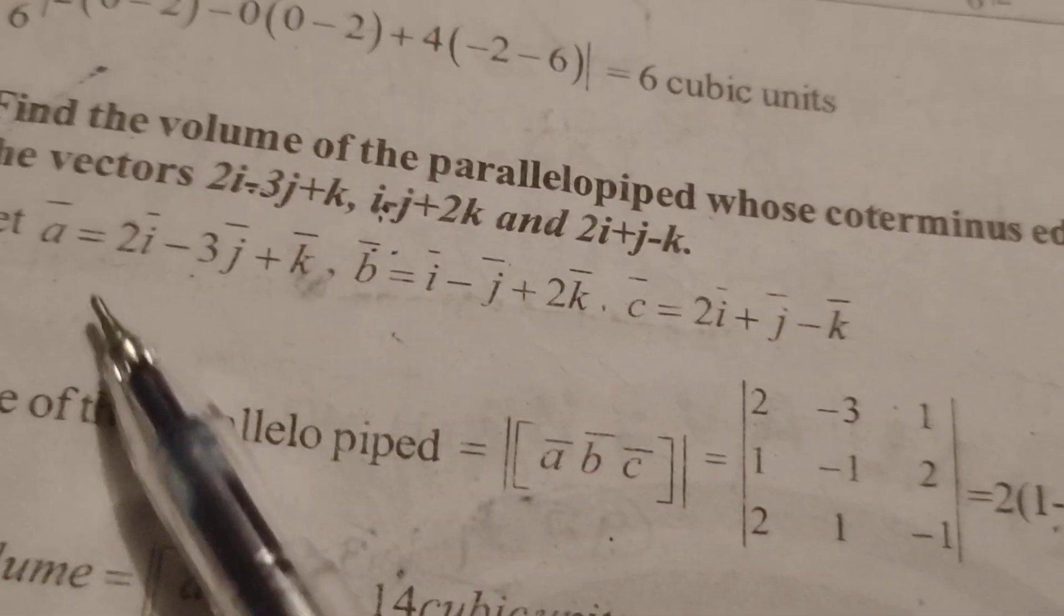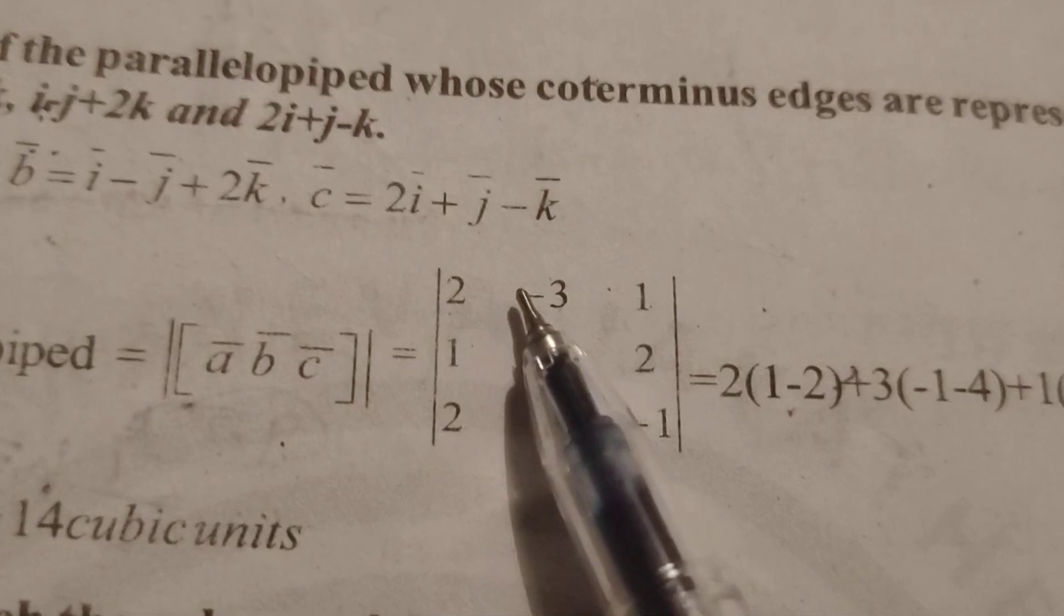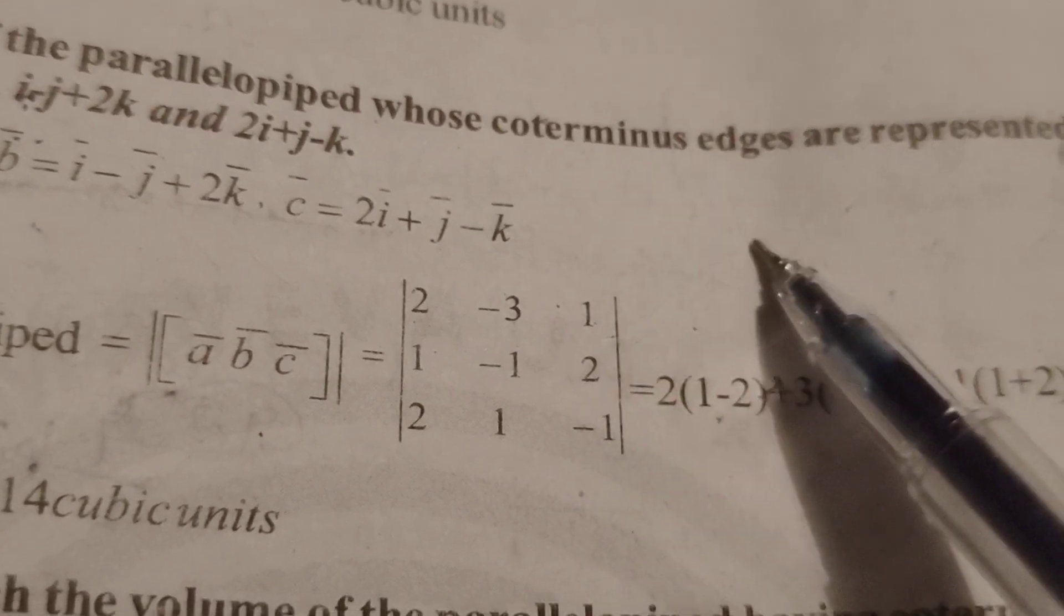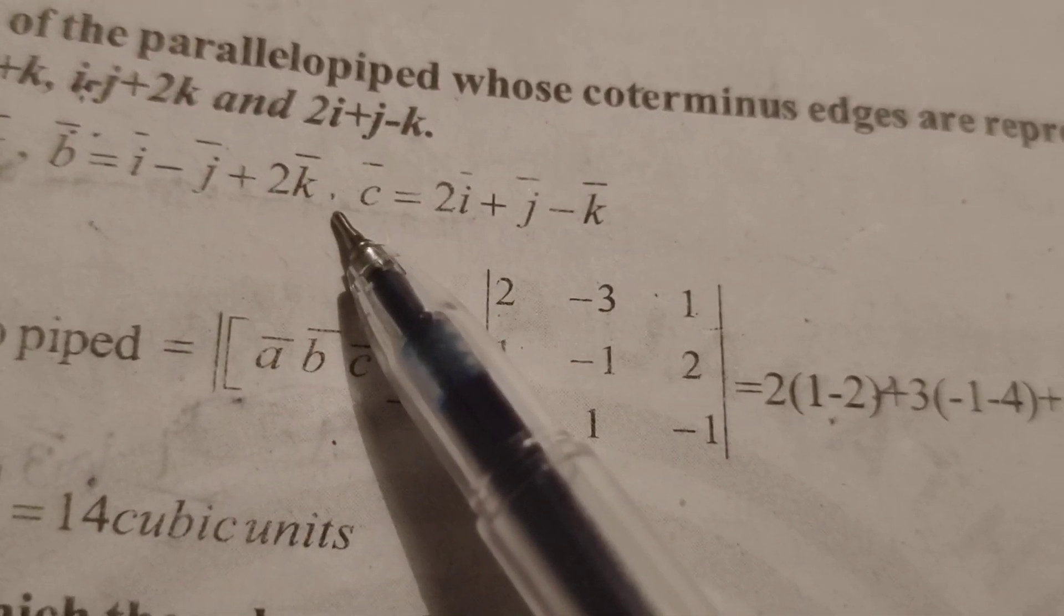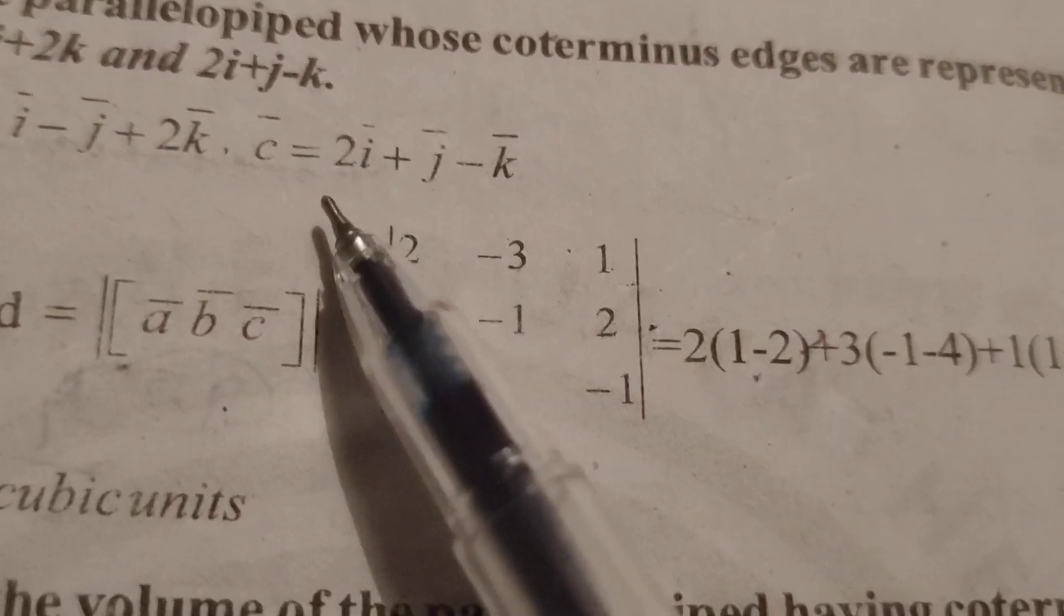In this a bar, i bar, j bar, k bar coefficients write in the first row of the determinant matrix. Similarly, we write b bar vector i bar, j bar, k bar coefficients in the second row, and the third vector i bar, j bar coefficients in the third row.